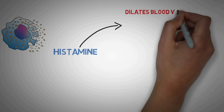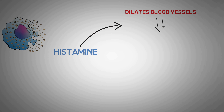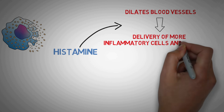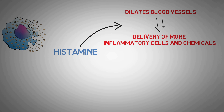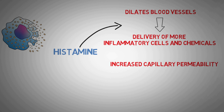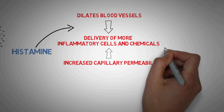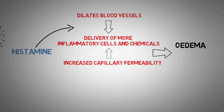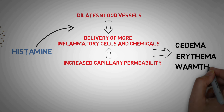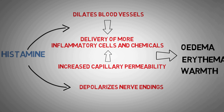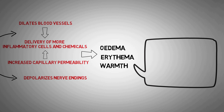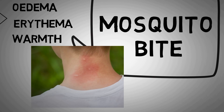Histamine acts on blood vessels and leads to their dilation, which leads to delivery of more inflammatory cells and chemicals to the site of allergy. Histamine also causes increased permeability of blood vessels, leading to increased transudation of cells from blood vessels into the tissue spaces. This leads to local edema, erythema — which means redness of the allergy site — and raised local temperature. Histamine also depolarizes nerve endings, which leads to itching and pain. A classical example of this is a mosquito bite: the bump and redness which develop in seconds are nothing but the immediate phase of type 1 reaction.